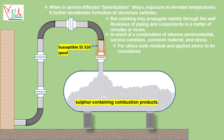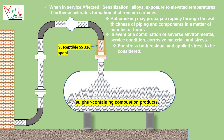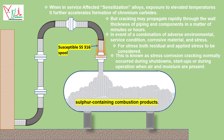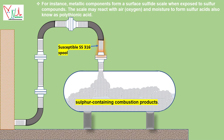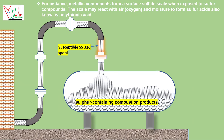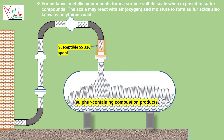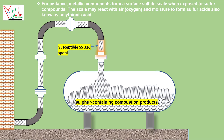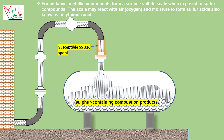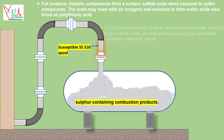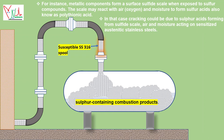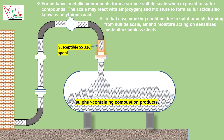Both residual and applied stresses must be considered. This is known as stress corrosion cracking, which normally occurs during shutdowns, startups, or during operation when air and moisture are present. For instance, metallic components form a surface sulfide scale when exposed to sulfur compounds. This scale may react with air, oxygen, and moisture to form sulfuric acids, also known as polythionic acid. Cracking can then result from these sulfur acids acting on sensitized austenitic stainless steels.